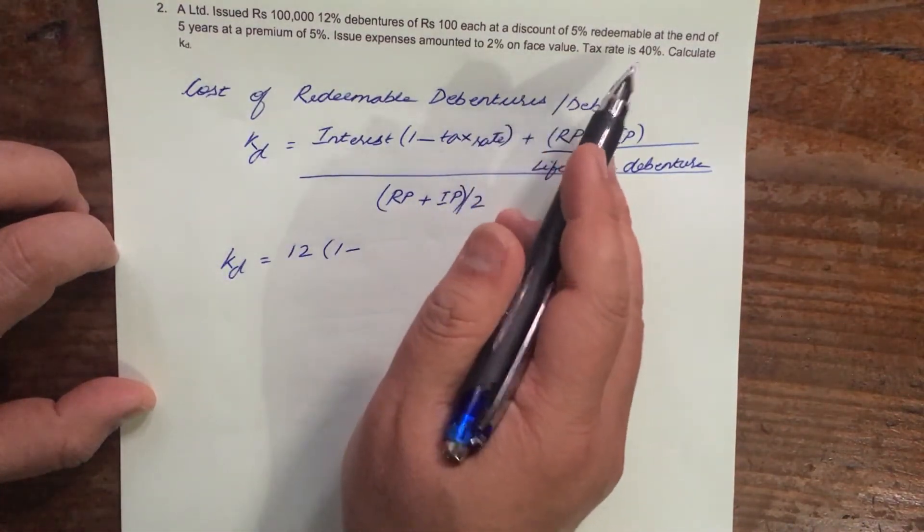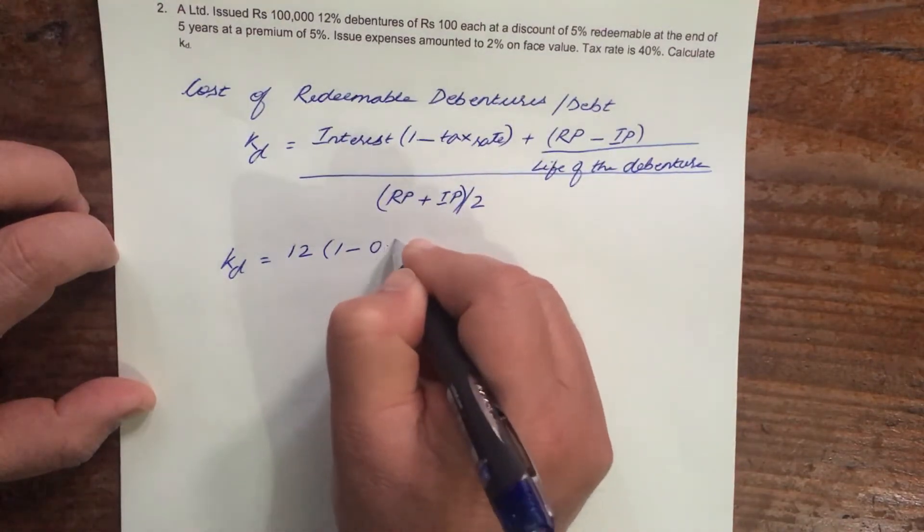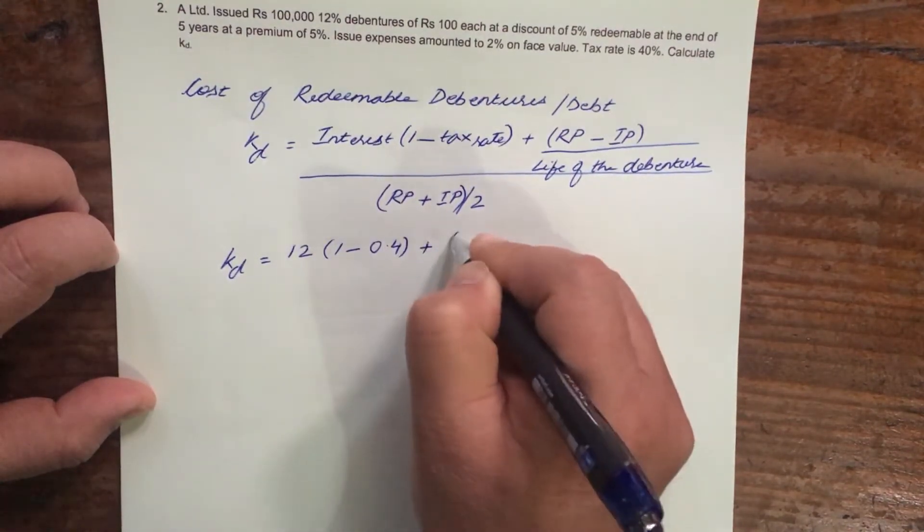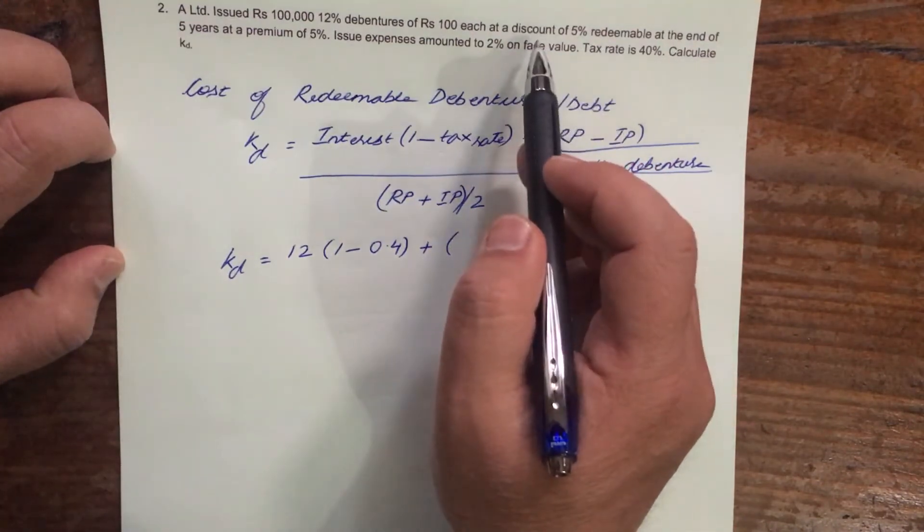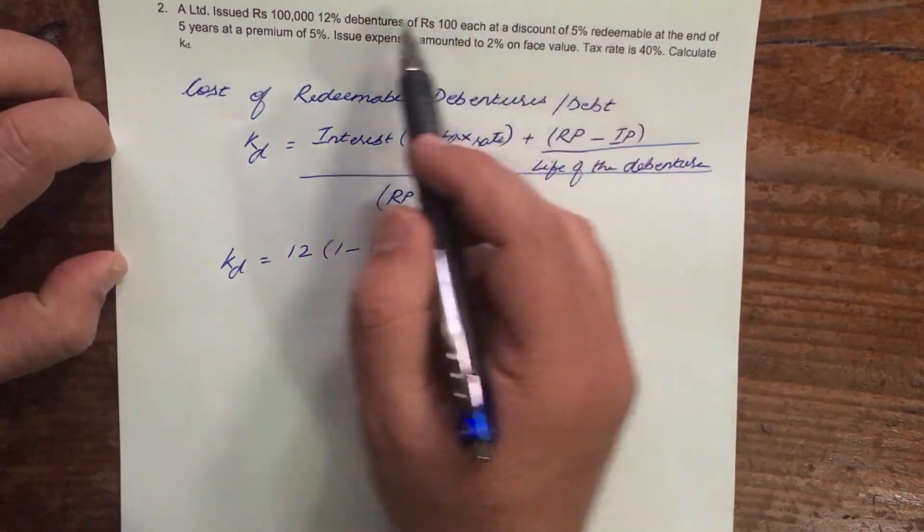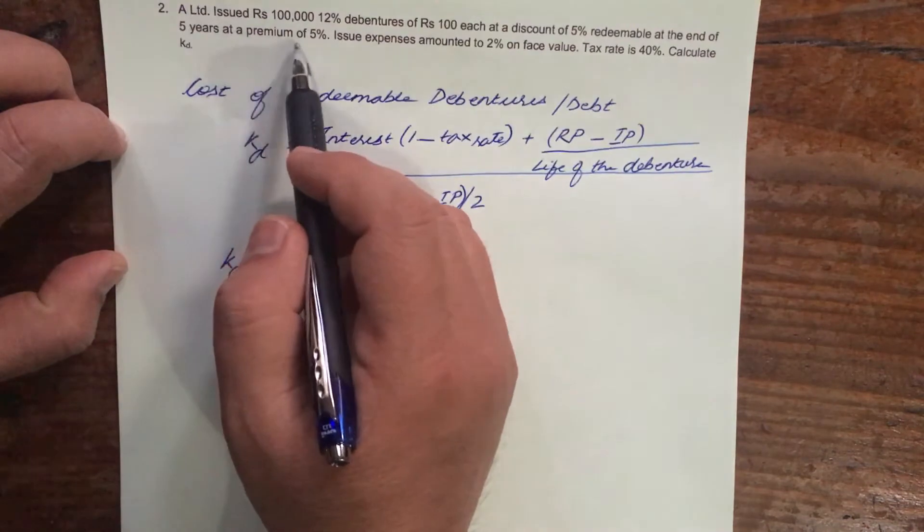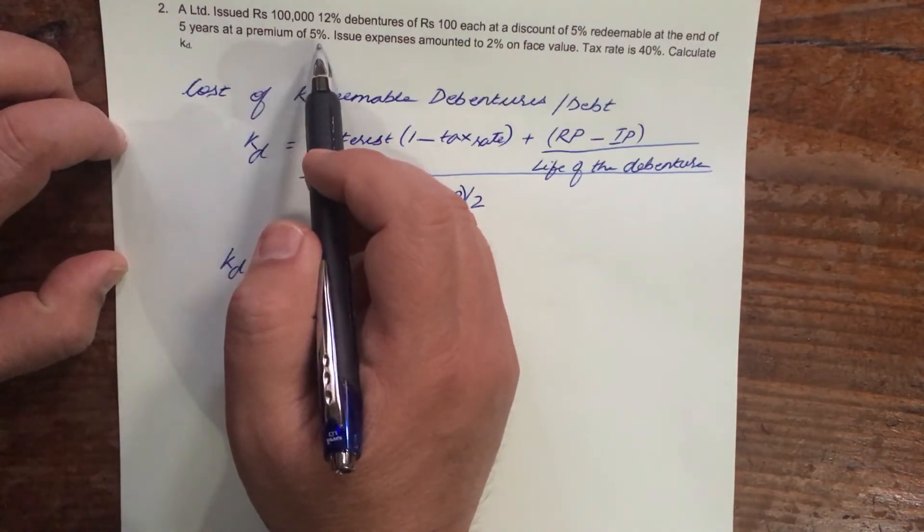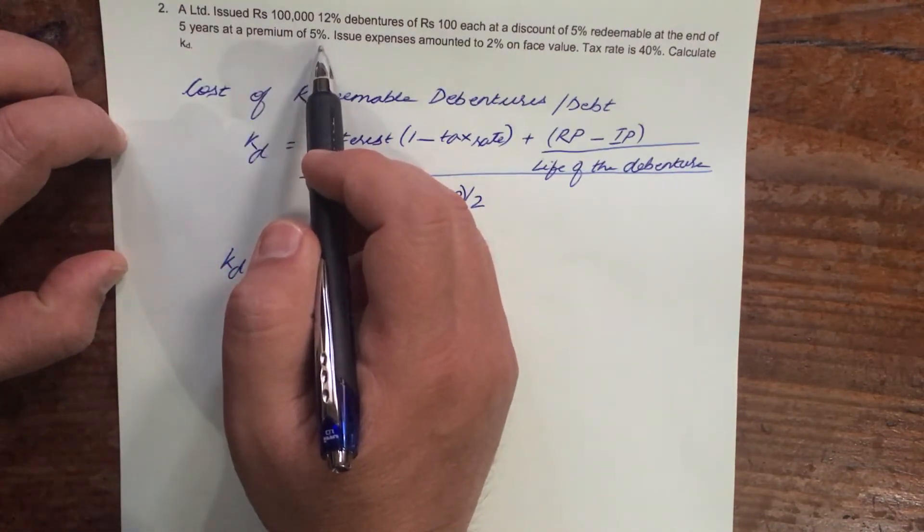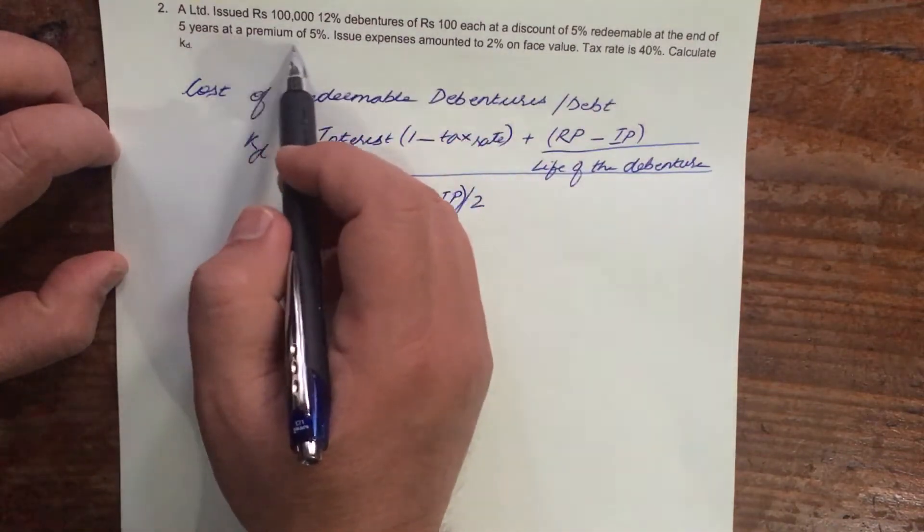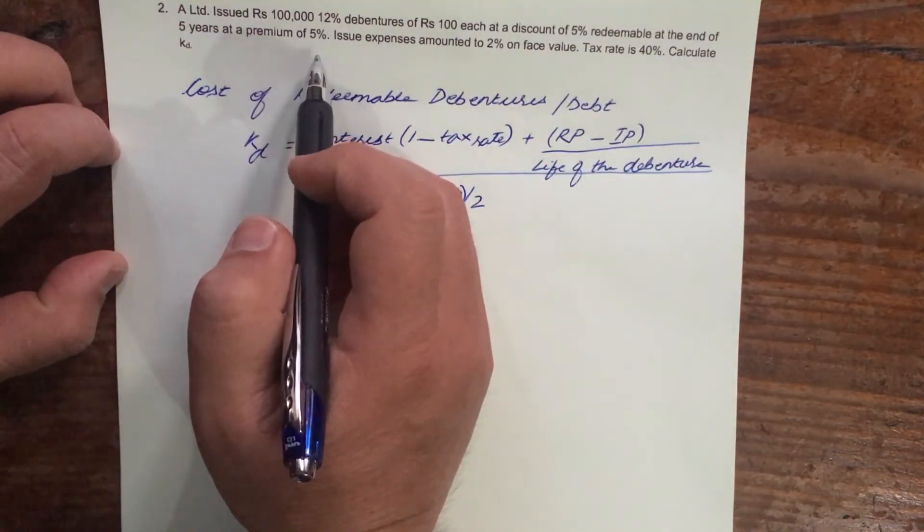What is the tax rate? 40%, so 0.4 plus Rp. What is the redemption price? It says here redeemable at the end of 5% at a premium of 5%, at a premium of 5%. So what is Rp? Let us calculate Rp here.